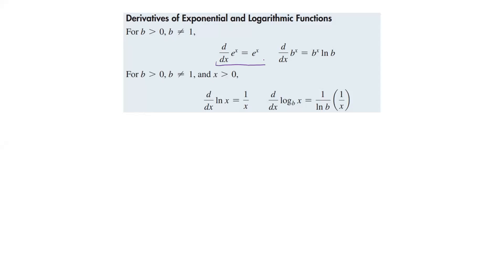Now here, this is a new one. Notice this is e to the x, this one is b to the x. So there's a difference here. When we have something b to the x, the derivative of that is it's going to be the same thing, b to the x, but then we also have to take ln of b.